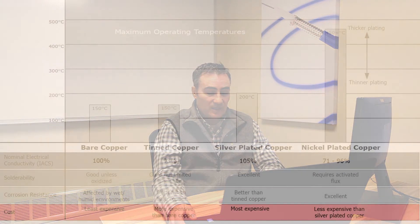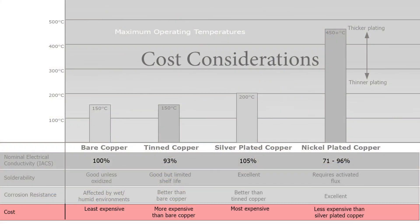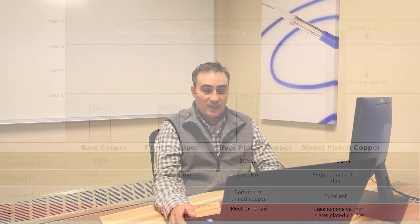Next on the list is cost. Silver plated copper will typically incur the highest cost as it is a precious metal. The costs vary as plating thicknesses vary — obviously, the thicker the plating thickness, the higher the cost.